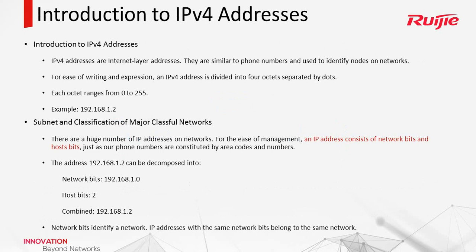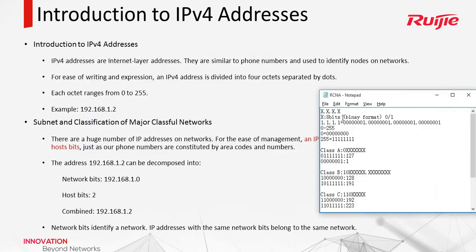So we need to talk about what is the IP address. In this course, we will talk about IPv4 address. One IPv4 address has four bytes, like this one. We can call it x.x.x.x, and one byte has 8 bits, because it is in binary format.